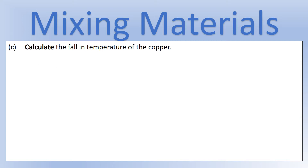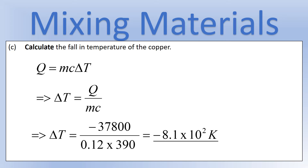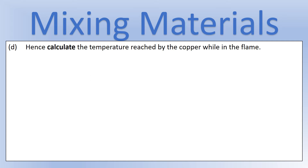Next, using the values already calculated, work out the fall in temperature of the copper. We use Q = mcΔT again — no state change — and rearrange to make ΔT the subject. Plugging in the unrounded value of Q gives a temperature change of approximately −810 Kelvin, which is negative because the copper is cooling down. That's how much the copper's temperature decreases when placed in the water.